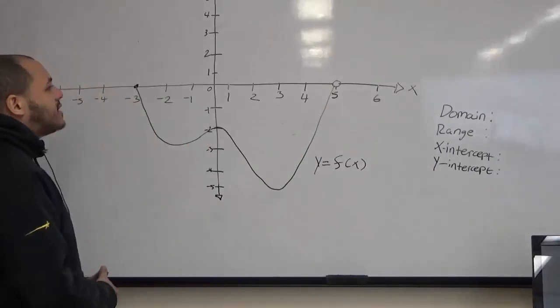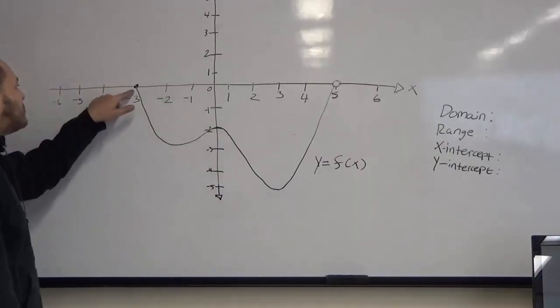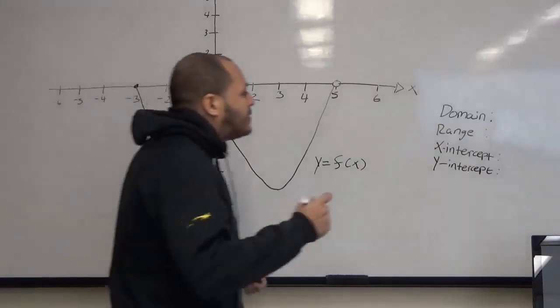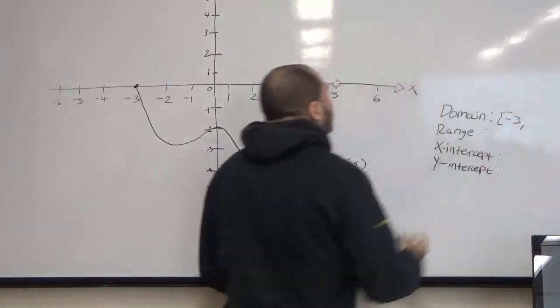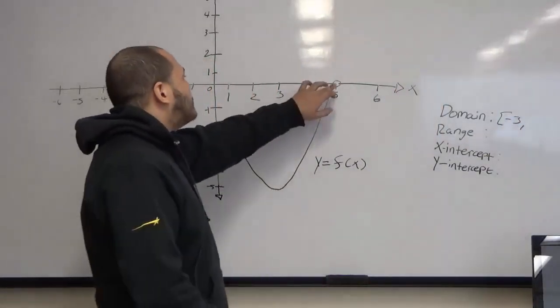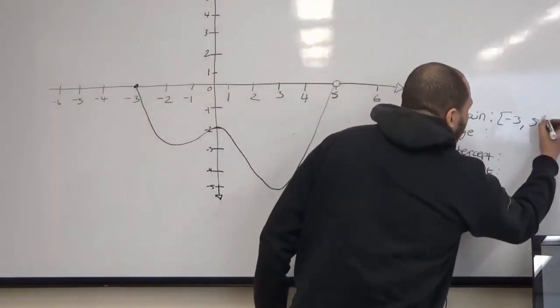So first off, to find our domain, we have to look at our x values. Here we see that we have a closed point, so that means we use interval notation, closed, negative 3. And then we have 5 here, but this is an open interval, so we use 5 parentheses.